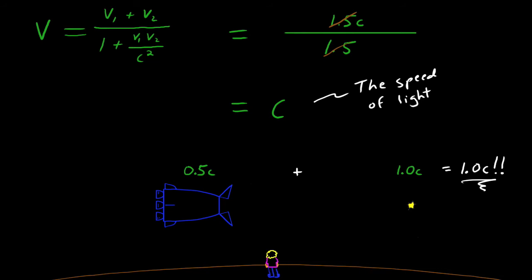No matter where you are or what you're doing in this universe, the speed of light is something we all have in common. It's a universal constant, which is why we represent it using the letter C.